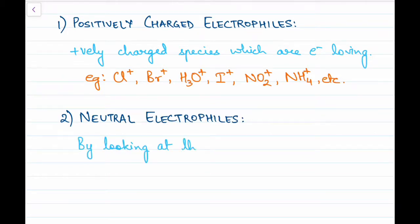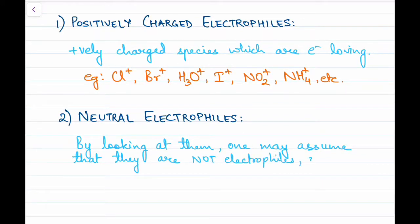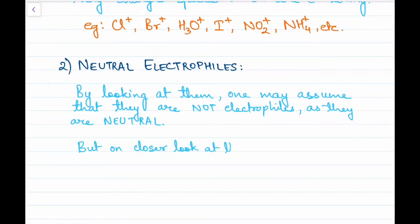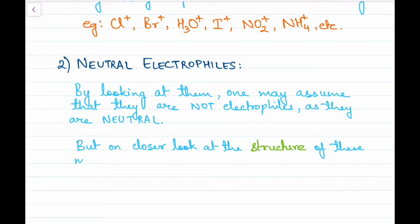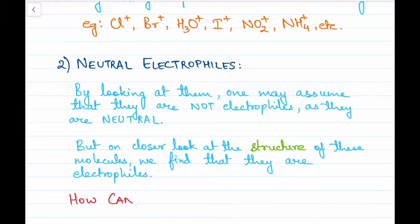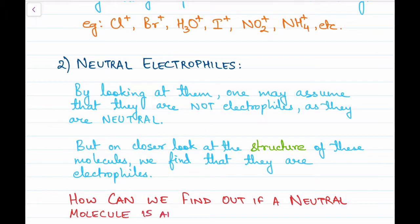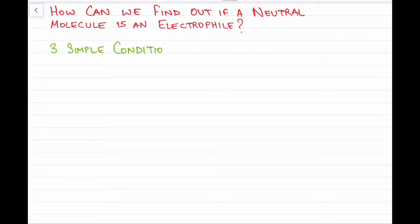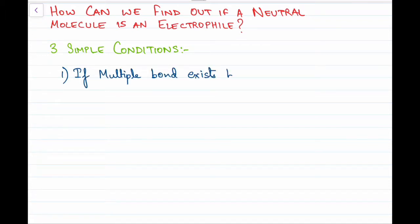Neutral electrophiles — this is where you need to pay attention. Just by looking at them you may assume these are not electrophiles because they seem neutral, but on a closer look at the structure of these molecules you'll understand that they are. To make things simple, we'll give you three basic conditions so you'll be able to find out if a neutral molecule is an electrophile.